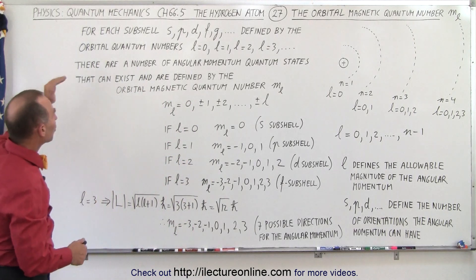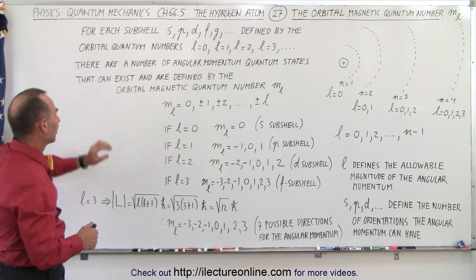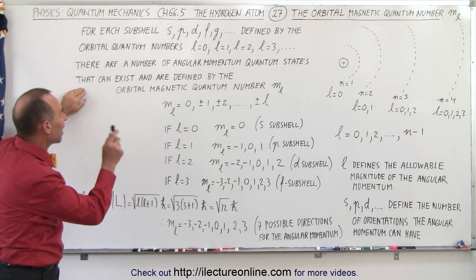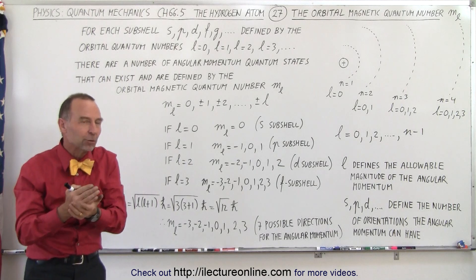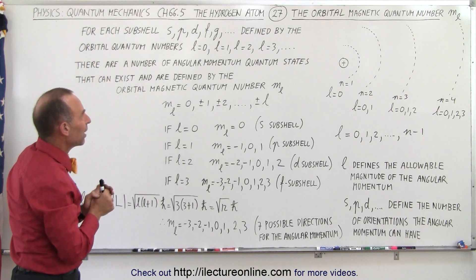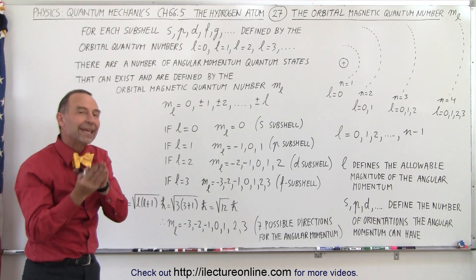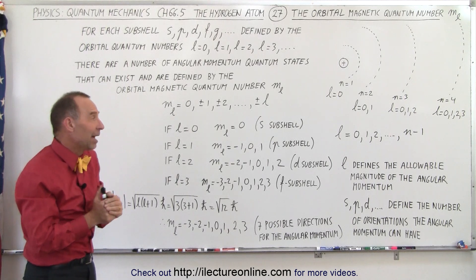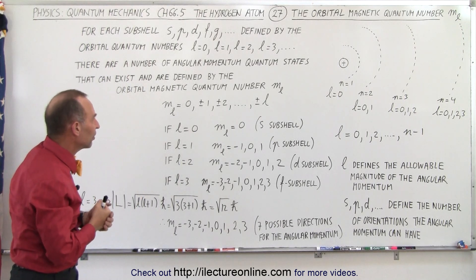And then there are a number of angular momentum quantum states that can exist and they're defined by the orbital magnetic quantum number M sub L. In a particular subshell, there are various orientations that the angular momentum can have, and those orientations are those various angular momentum quantum states.